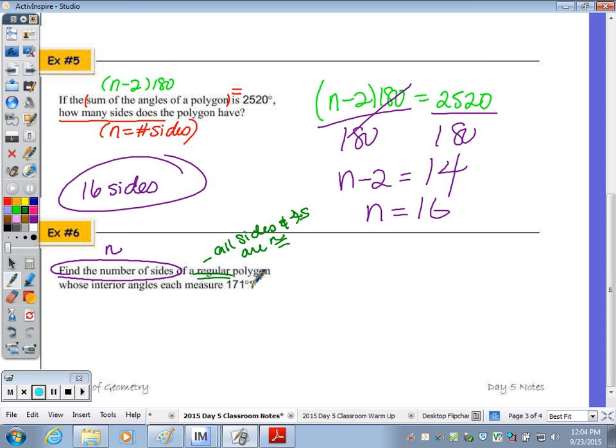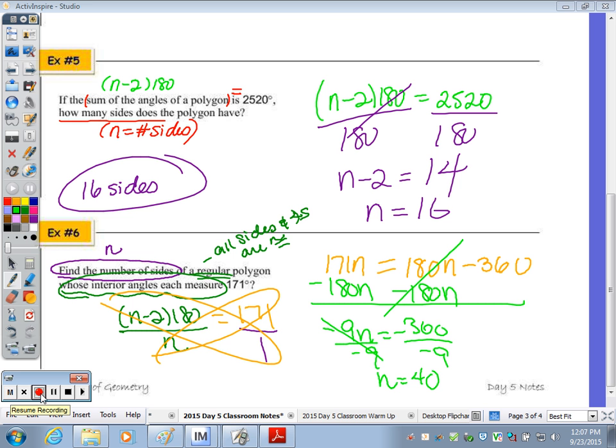Interior angle, to find each, we did the n minus 2 times 180 divided by n. What it's saying is, after we do that, we get 171 degrees. Now let's take a moment to solve this equation. After solving the equation here, our number of sides is 40.